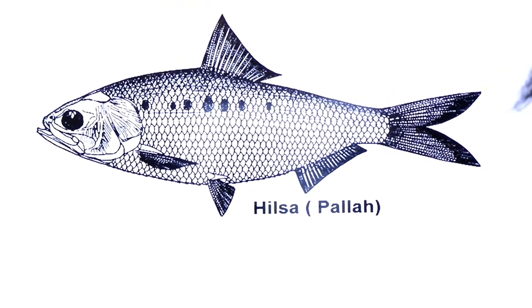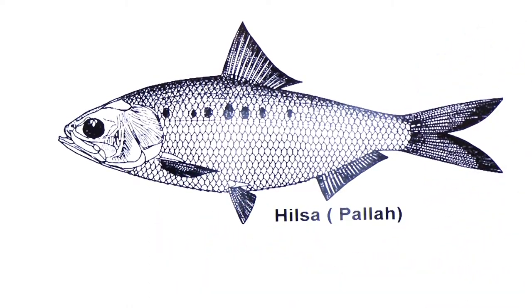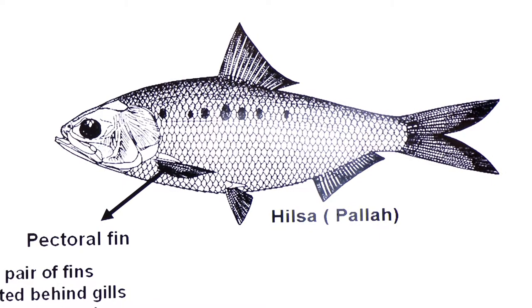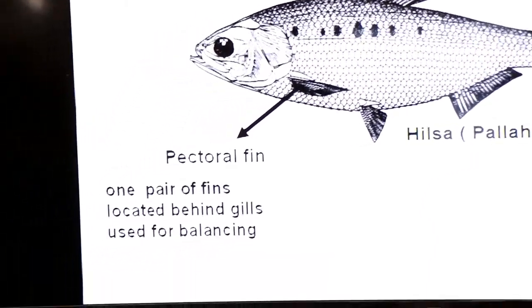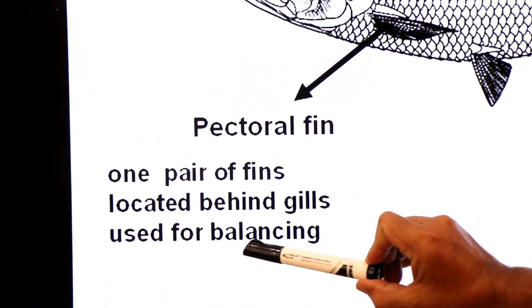Hilsa, this fish is commonly known as Palla. Look at here, these are the fins known as pectoral fins. Dear students, these are paired fins. Pectoral fins, one pair of fins located behind gills. And what is function of pectoral fins? Used for balancing.